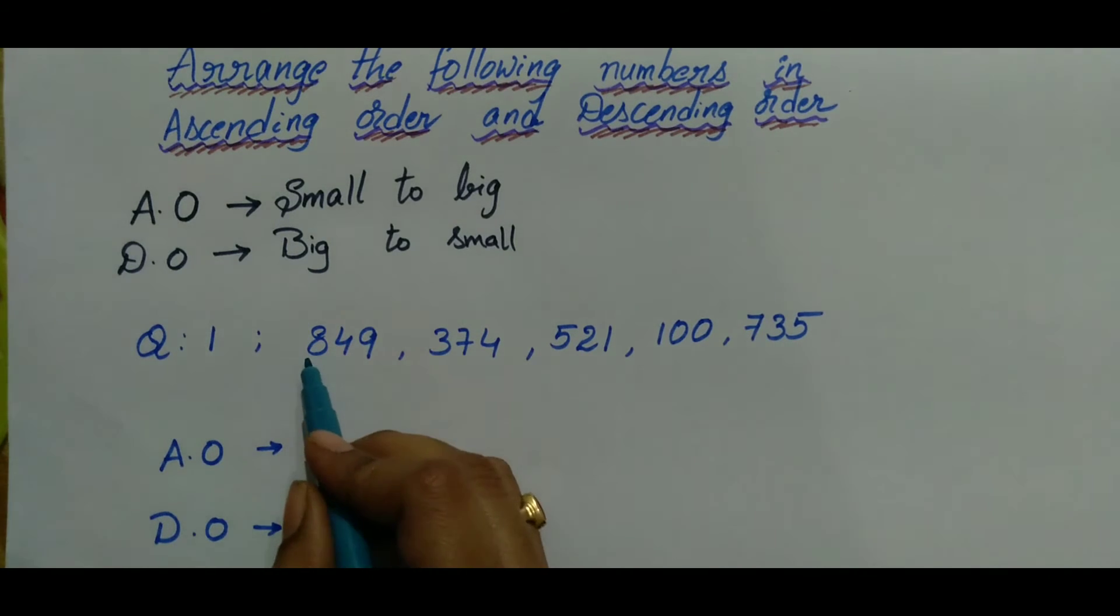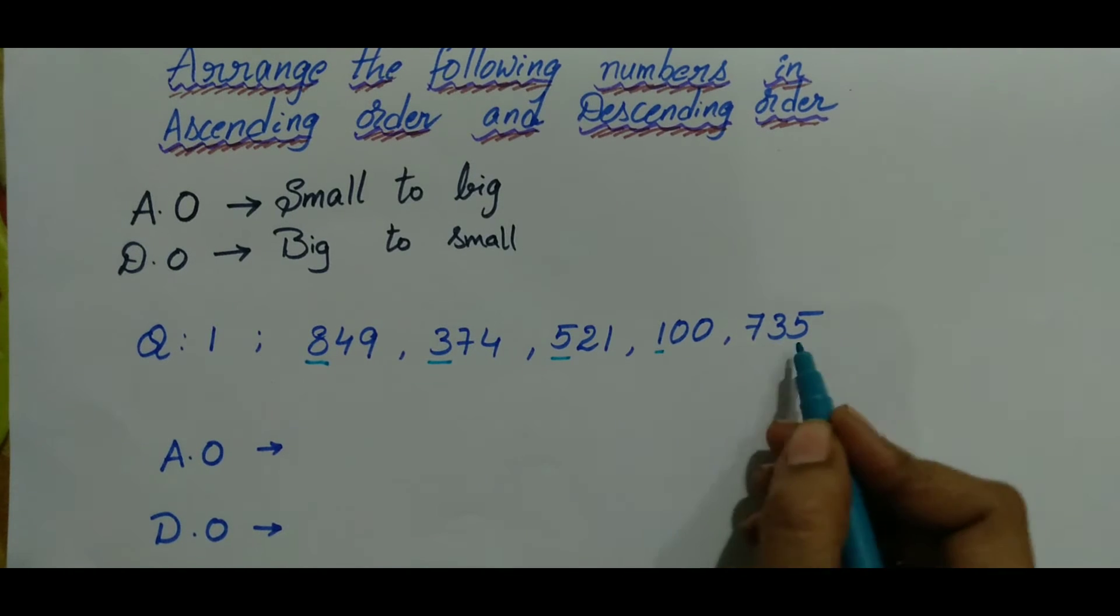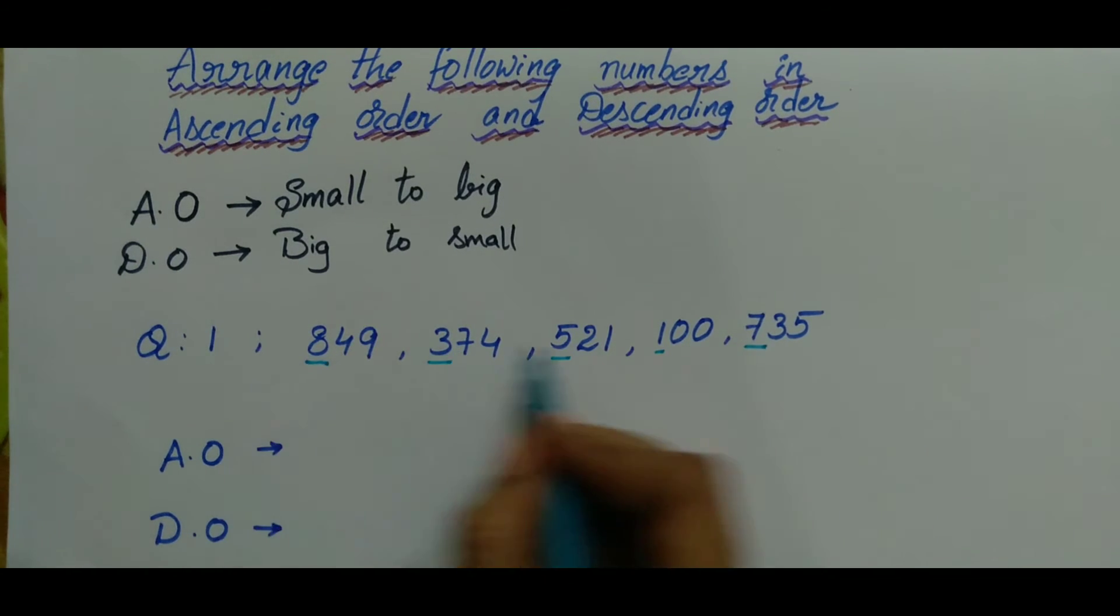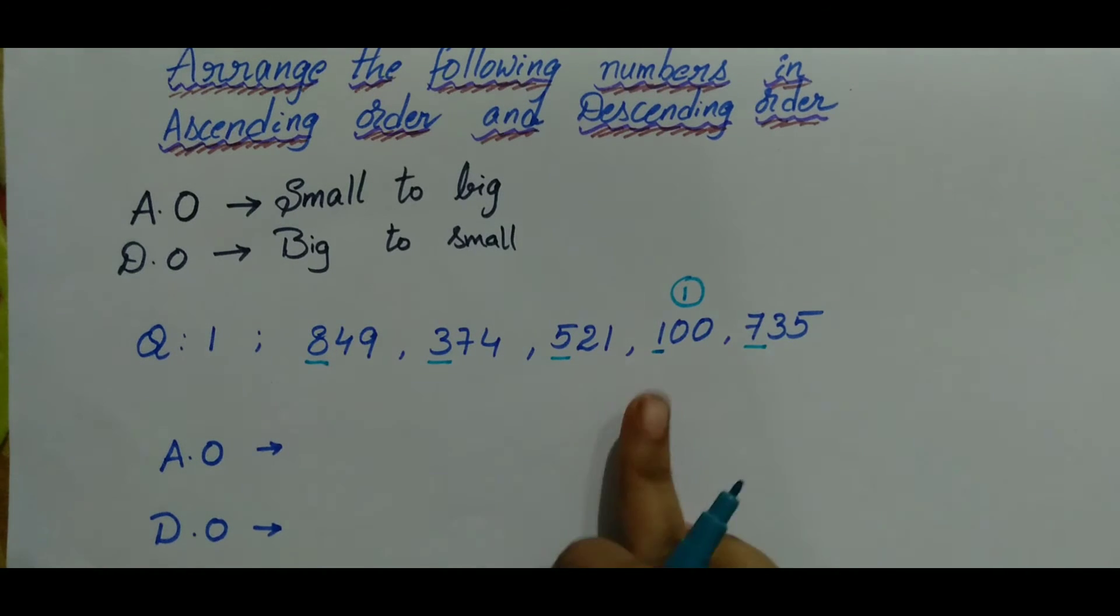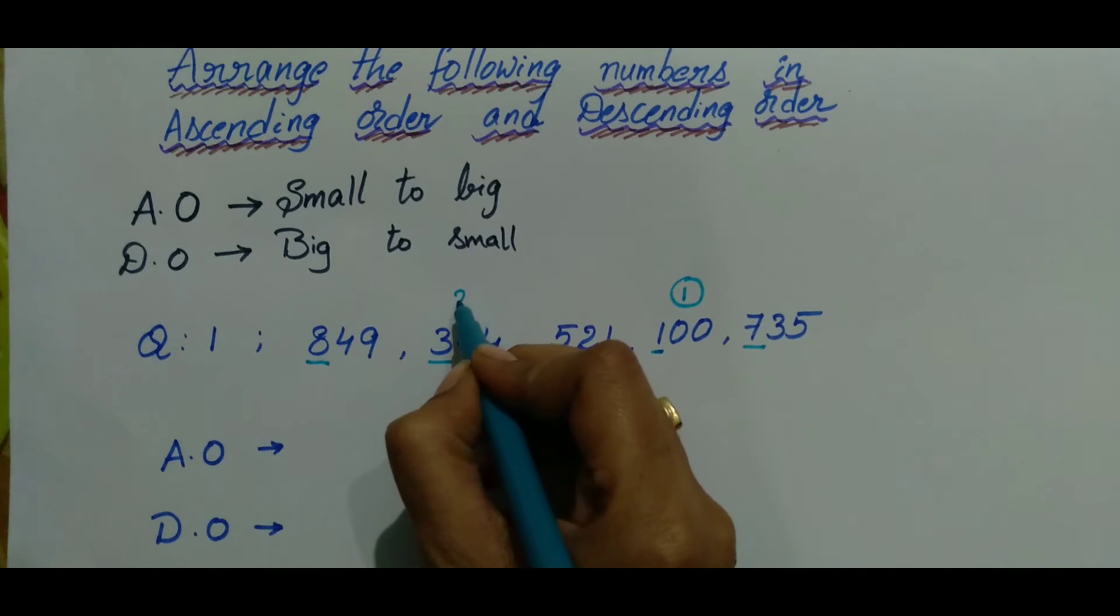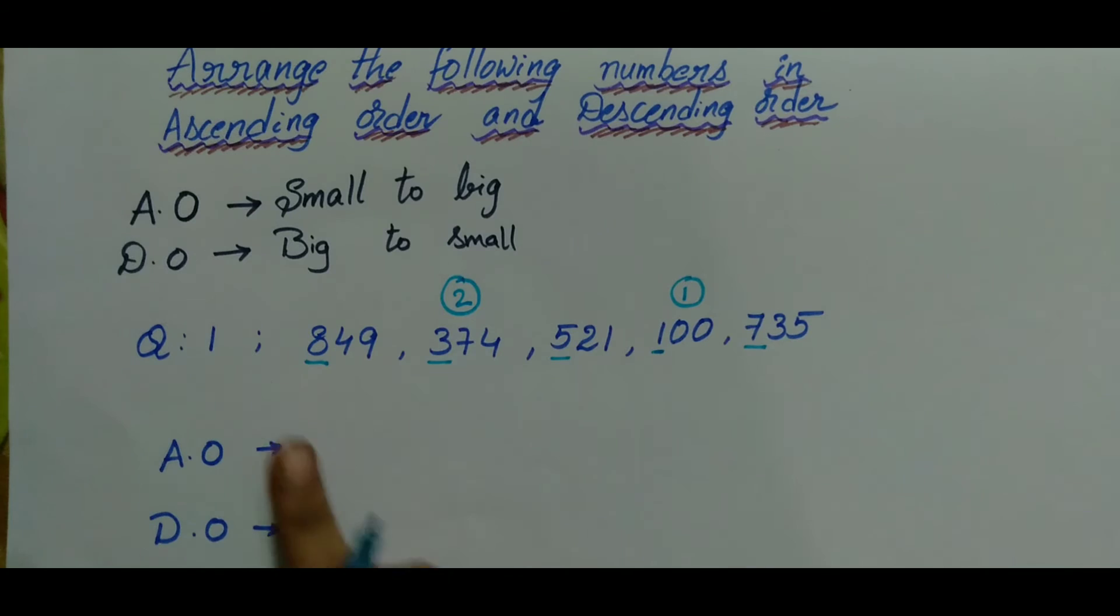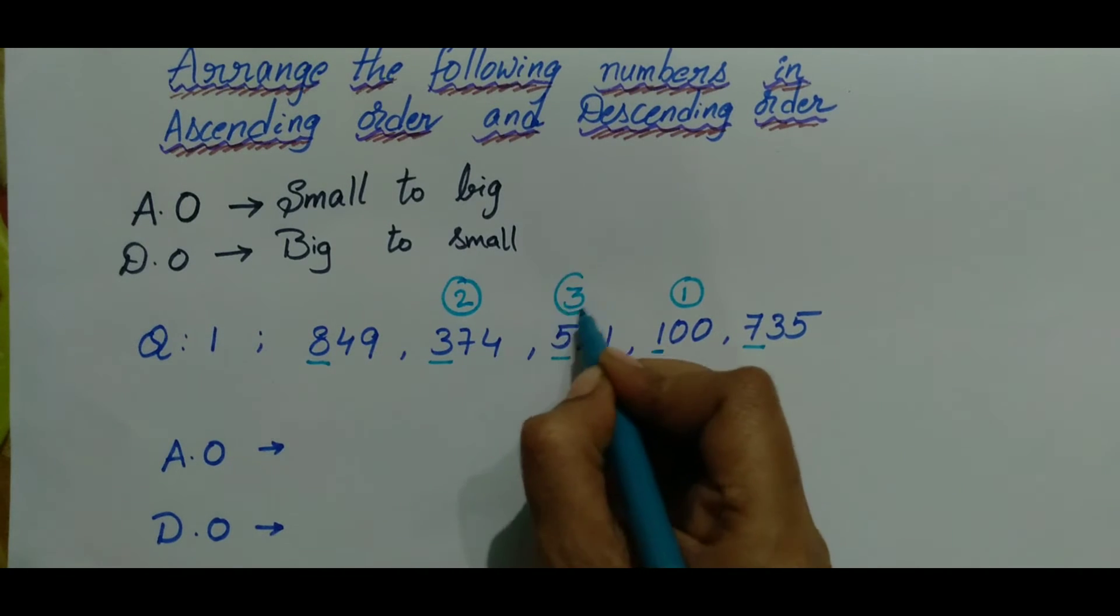here are the numbers given to arrange in ascending order and descending order. Here we compare the 100th digits: 8, 3, 5, 1, and 7. Among all these, 1 is the smallest number. So we write 1 in the position of first place. And after 1, 3 is the greater number. So we write it in the second position. After that, 5 is a greater number. So we write it in the third position.